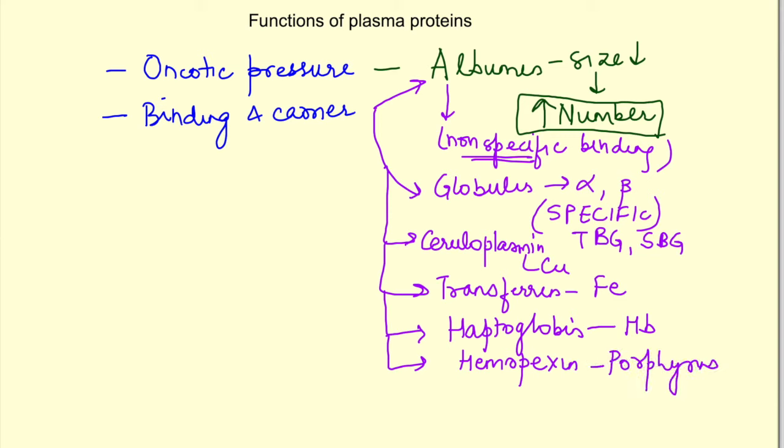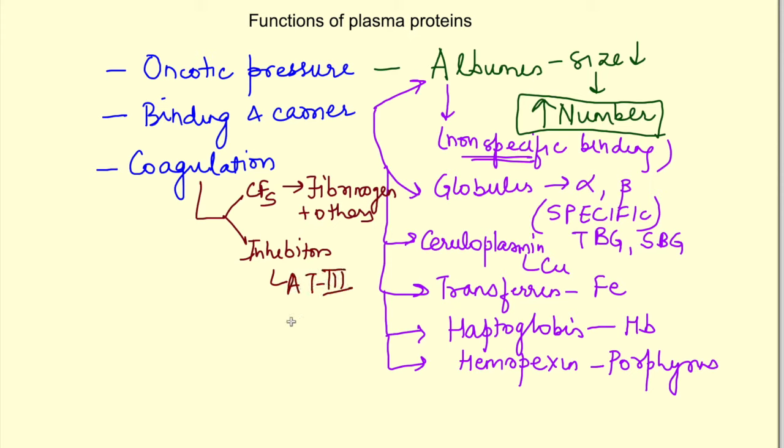Next function is in coagulation because some proteins act as clotting factors while others act as inhibitors of coagulation. For example, fibrinogen forms fibrin, and obviously there are other clotting factors as well. The proteins which act as inhibitors of coagulation, like antithrombin-3, are also present.